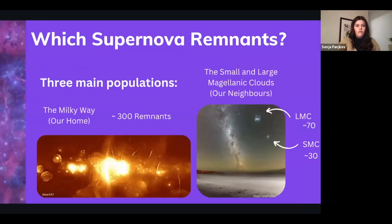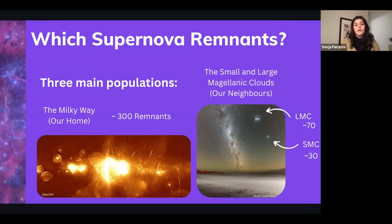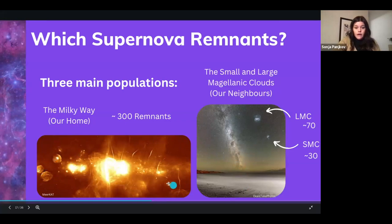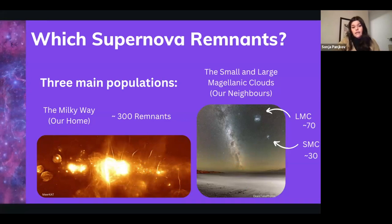There are three main populations of supernova remnants that researchers study. First, galactic supernova remnants — those in the Milky Way — with roughly 300 known. An image from the MeerKAT radio telescope in South Africa shows these blobby structures scattered across the galactic plane. Being nearby means we get very high-resolution images. However, the galactic center has lots of emission from other processes, dust, and obscuring material, which can make studying them difficult.